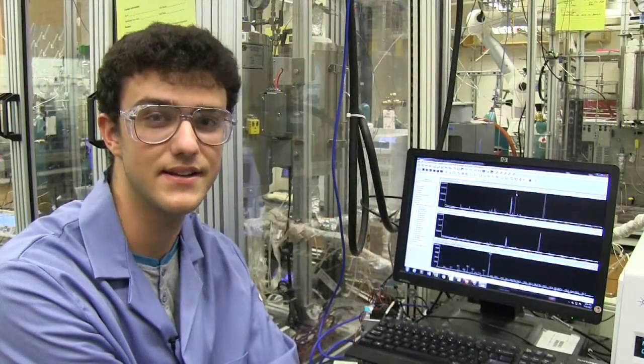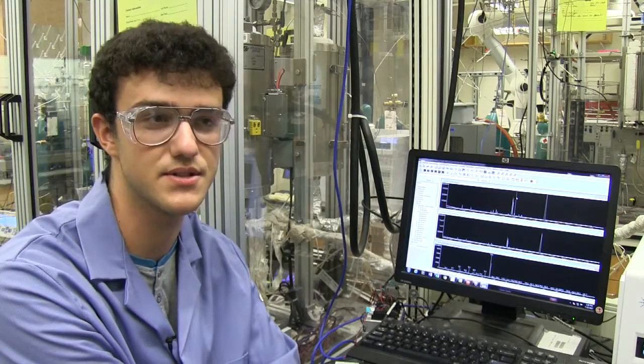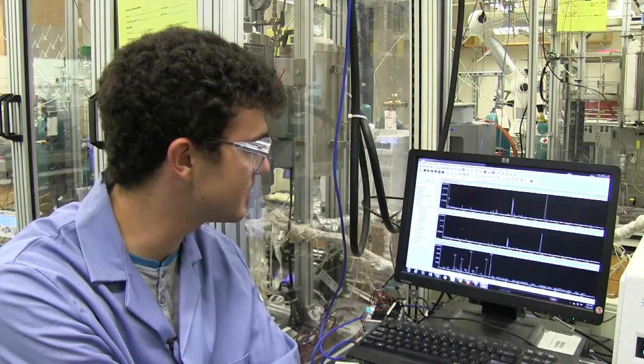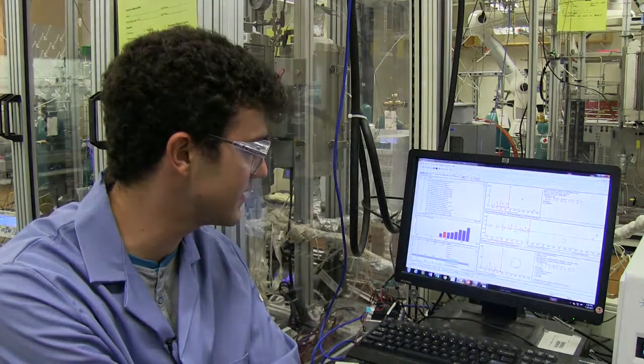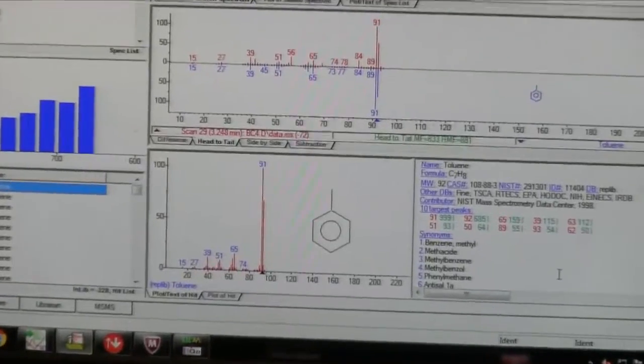One exciting thing is that while I've been here, I've actually been able to find reaction conditions that produce some of the products that we want to create. For example, if I look in at this peak right here, I can see that I actually generate a chemical called toluene.